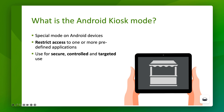Android kiosk mode is a special operating mode that allows you to restrict an Android device to one or more predefined applications. This prevents users from accessing other applications or features on the device. This mode is often used in enterprises and public institutions to deploy devices in a secure, controlled, and targeted manner for specific tasks, such as self-service, information provision, or specialized enterprise applications.